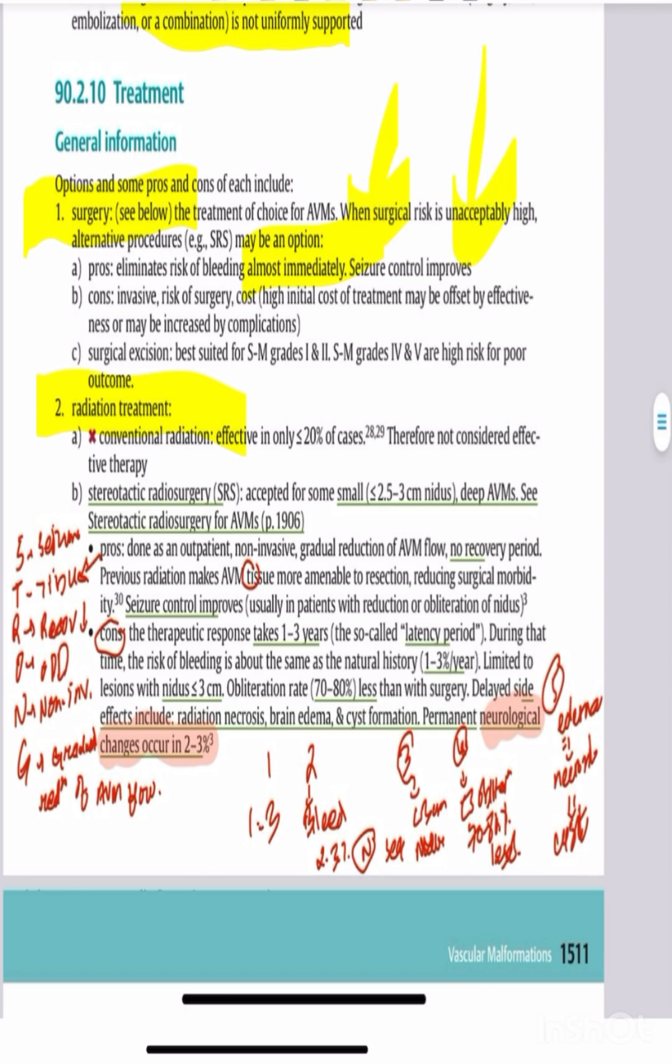Radiation treatment, specifically stereotactic radiosurgery like Gamma Knife, is used for AVMs less than 2.5 to 3 centimeters. It provides gradual obliteration and is useful for deep or eloquent location AVMs.